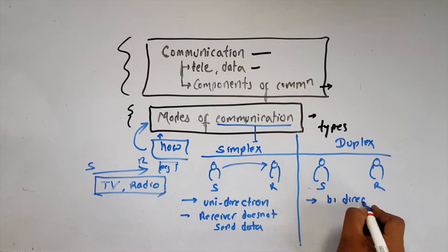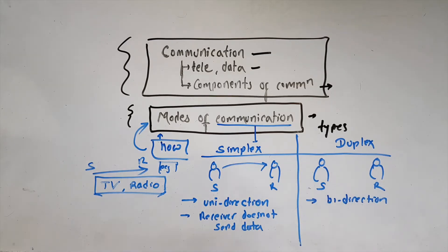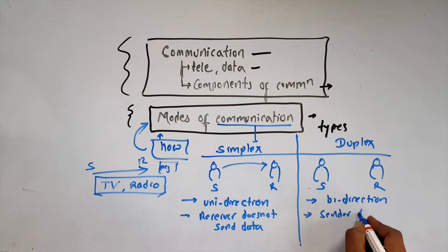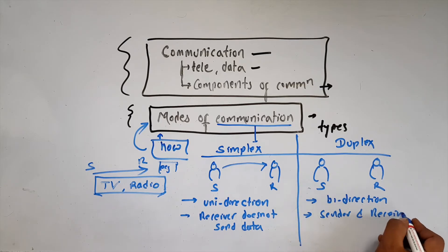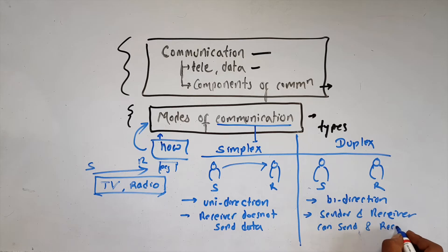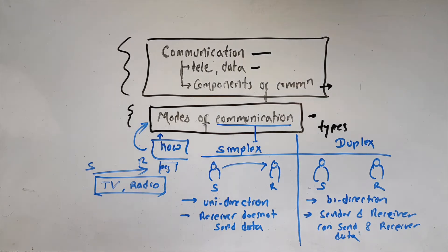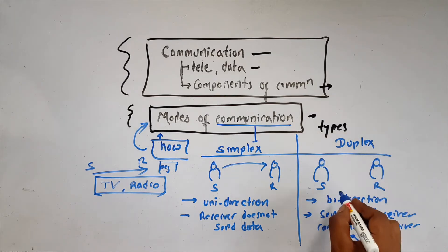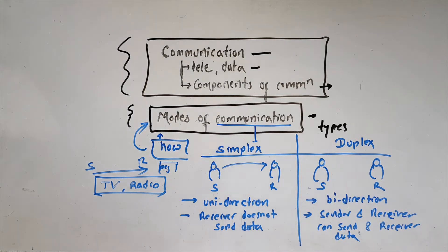Next is duplex — a bidirectional mode of communication. In duplex, both sender and receiver can send and receive data. The duplex mode of communication is a bidirectional mode in which sender and receiver both can send and receive data simultaneously.